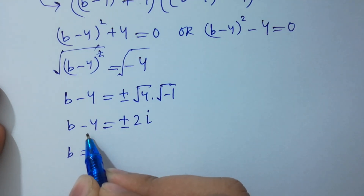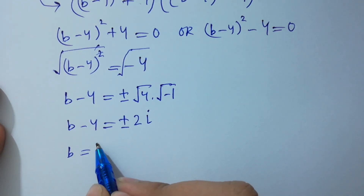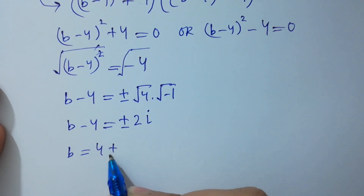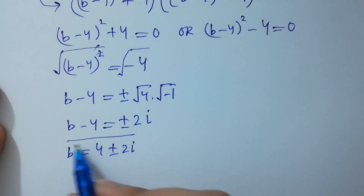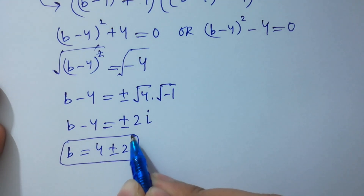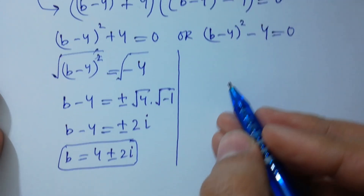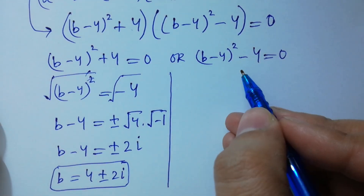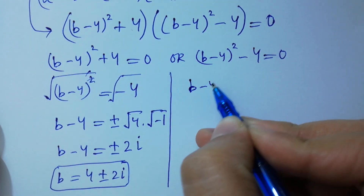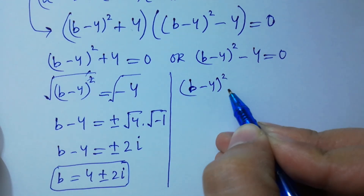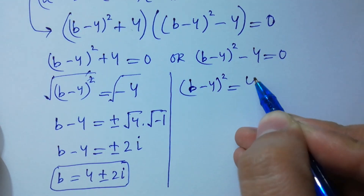So b-4 = ±2i gives two complex solutions. Now from the second factor: (b-4)² - 4 = 0, so (b-4)² = 4.